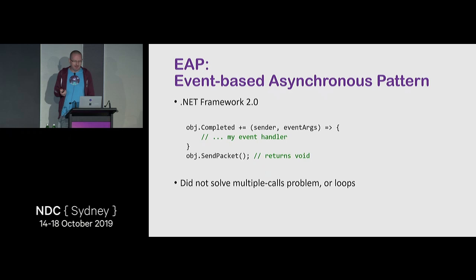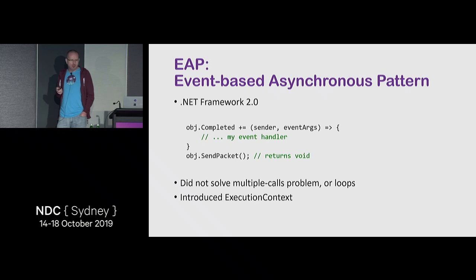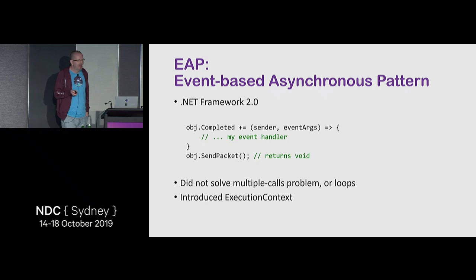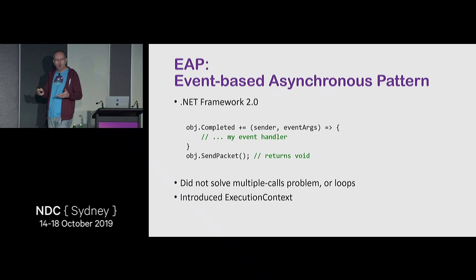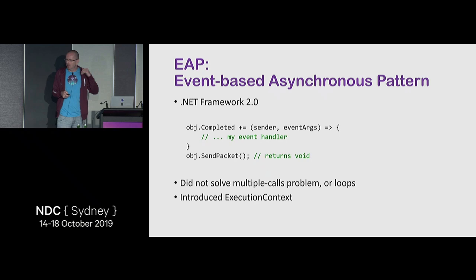One important thing that came out of EAP was the ExecutionContext, which you might have heard about — something like AsyncLocal, a place where you can store things that flow with your async execution across threads. AsyncLocal is actually built on top of that in later versions. So even though EAP wasn't very useful, at least some side effects were useful eventually.